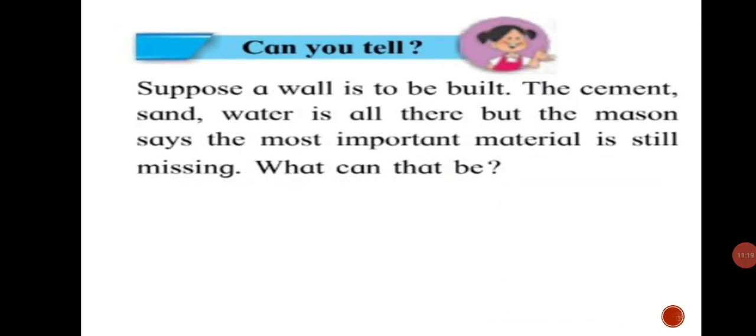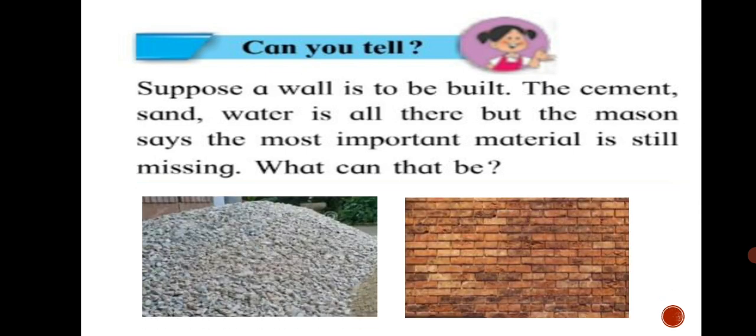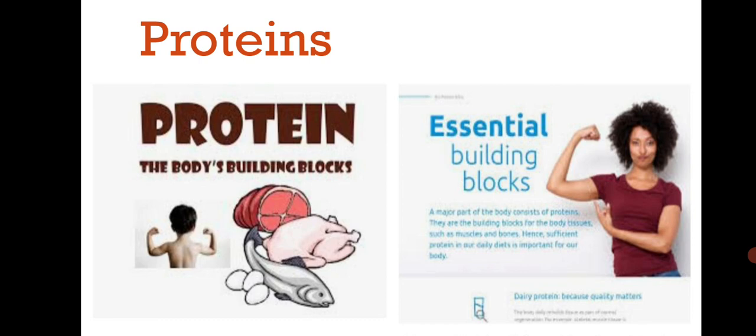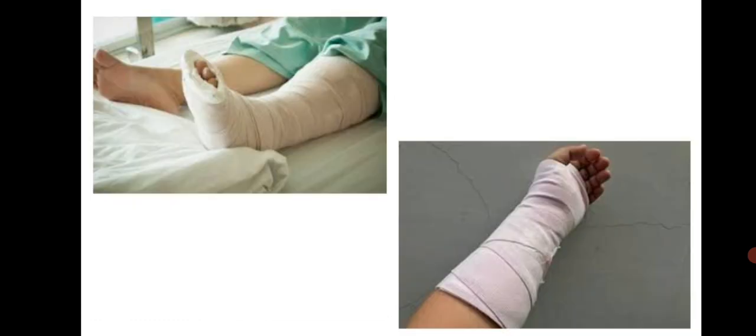Can you tell, suppose a wall is to be built, the cement, sand, water is all there. But the mason says the most important material is still missing. What can that be? That could be rocks and the bricks. These are the very important components to build a wall. Similarly, proteins. Just as stones and bricks are the building blocks needed for a wall, proteins are the building blocks of our body. The body undergoes wear and tear continuously. Sometimes, it gets injured. But the healing and repair of our body goes on all the time without our being aware of it.